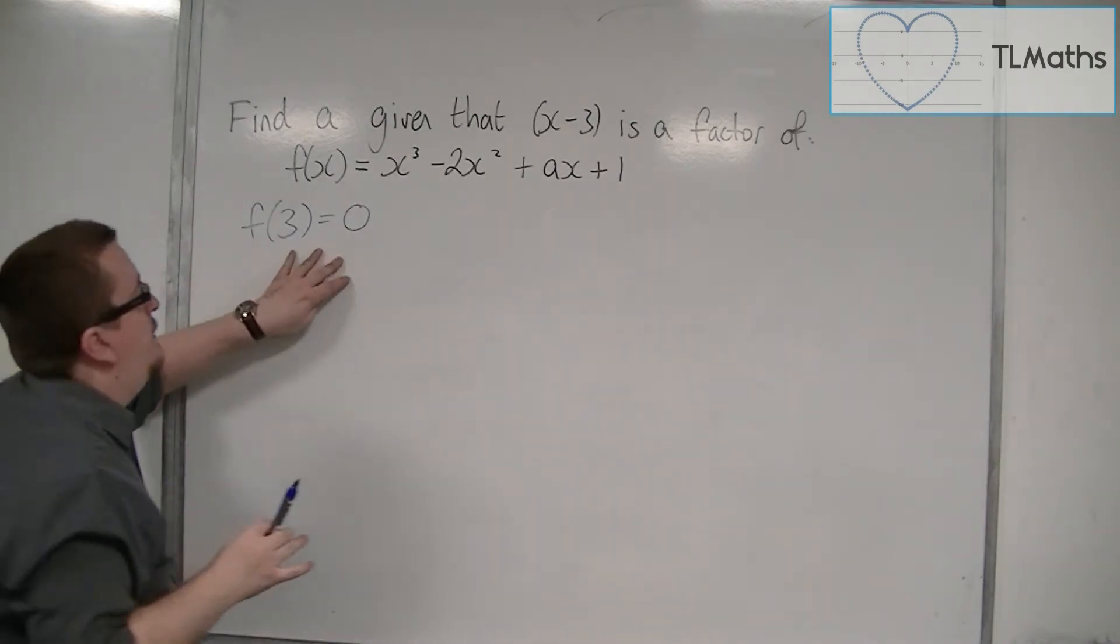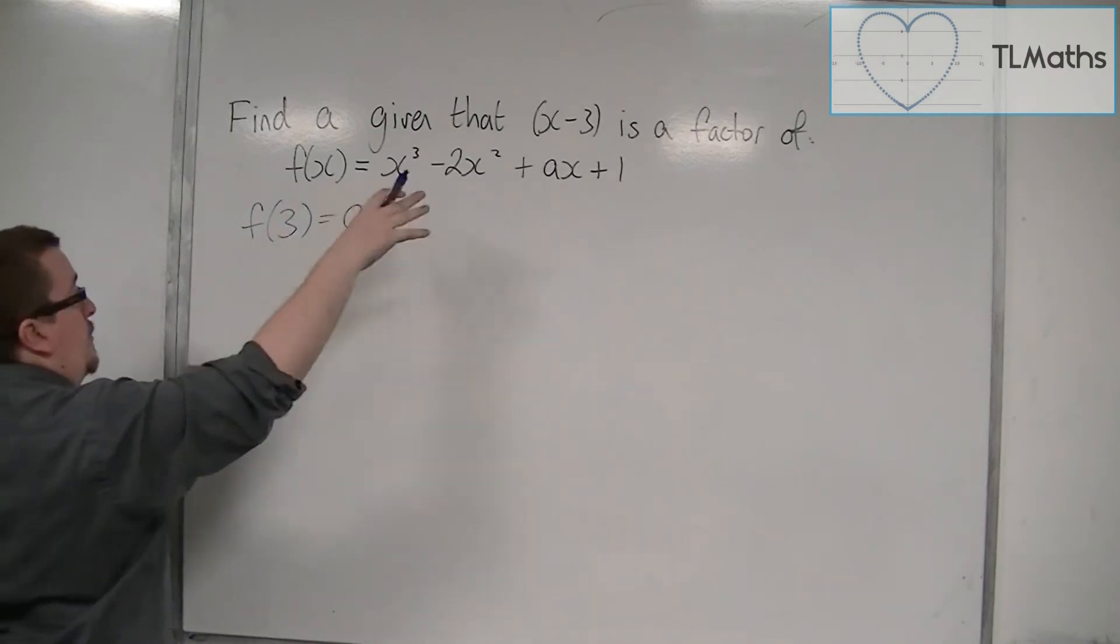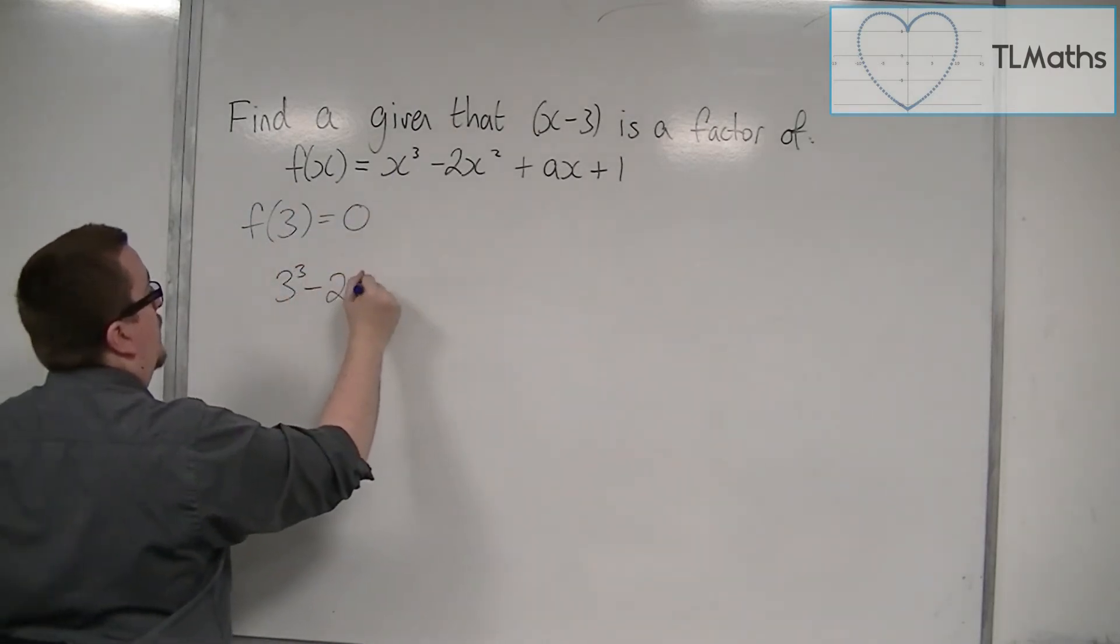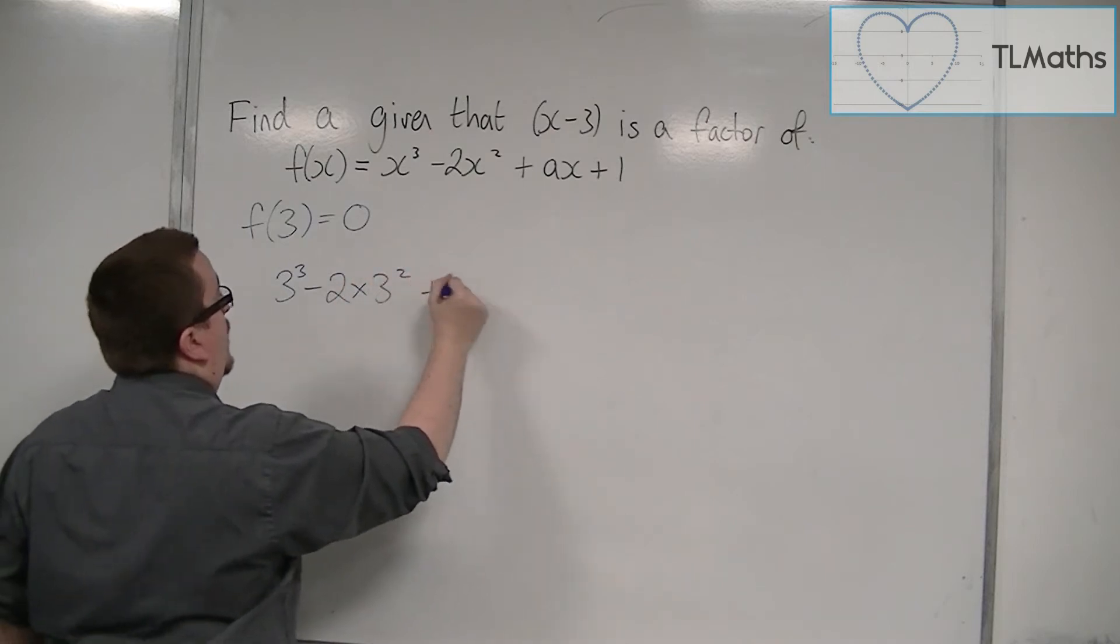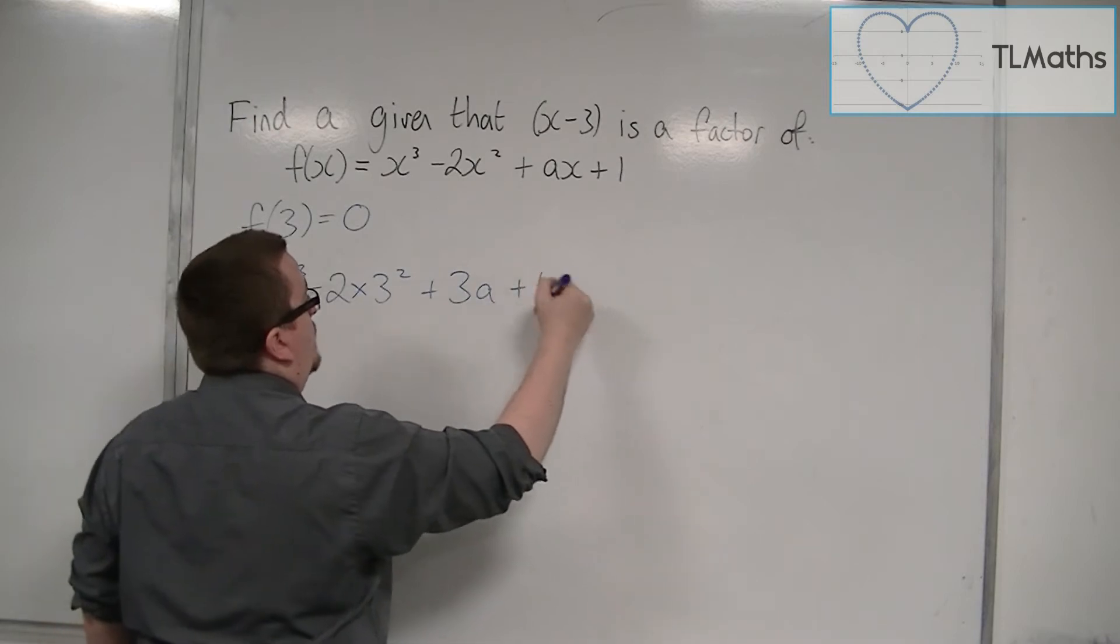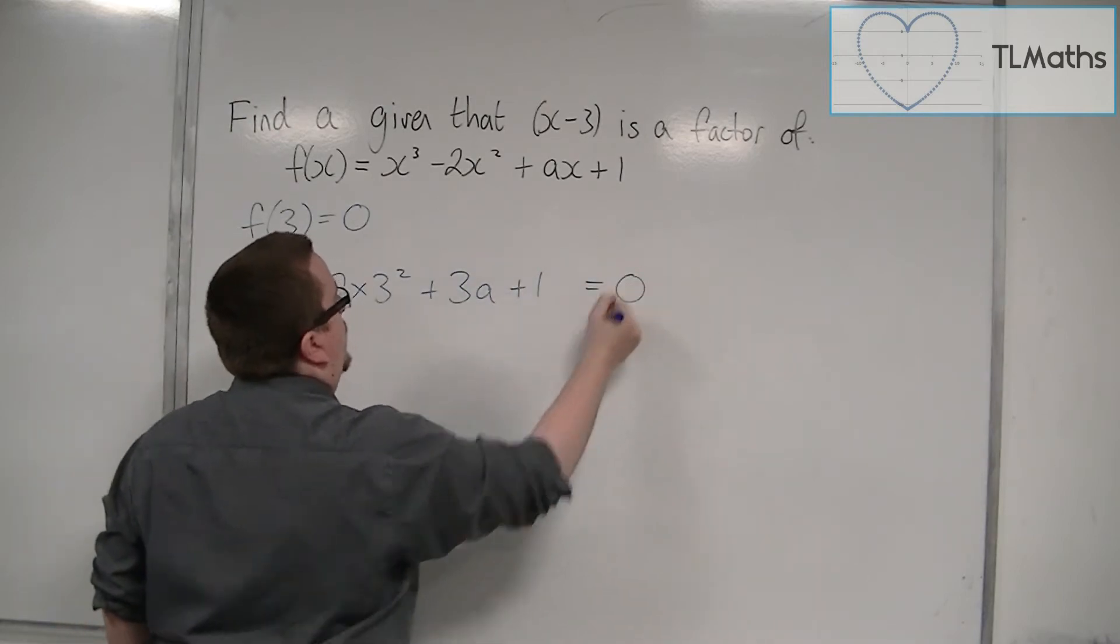So we can use that information. We can substitute 3 into this. So we're going to get 3 cubed, take away 2 lots of 3 squared, plus a lots of 3, so 3a plus 1. And that has got to be equal to 0.